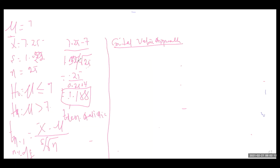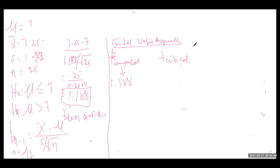Now, t computed is approximately 1.188. We need to find the t critical using the t-distribution table. From the formula, t uses n minus 1, which is the degrees of freedom. The sample size is 25, so the degrees of freedom is 25 minus 1, which equals 24.